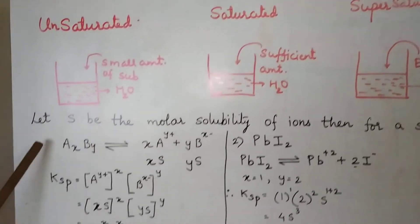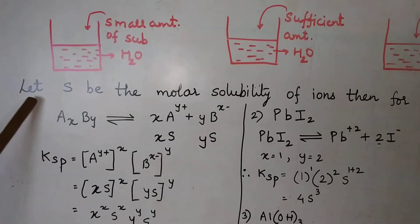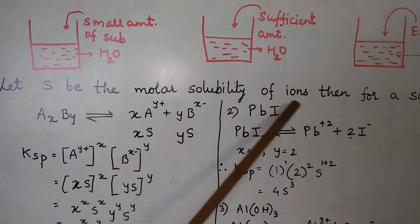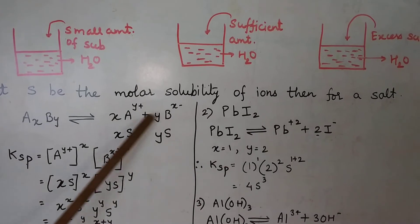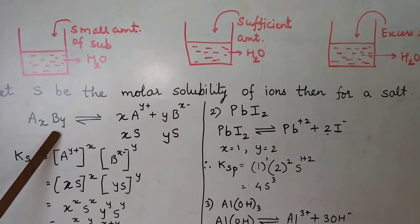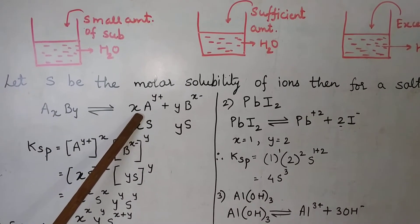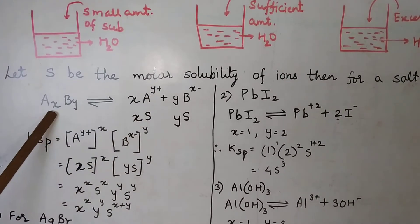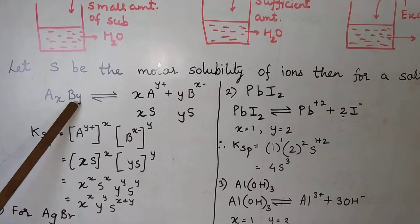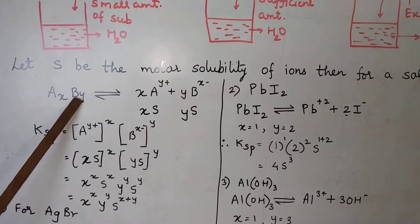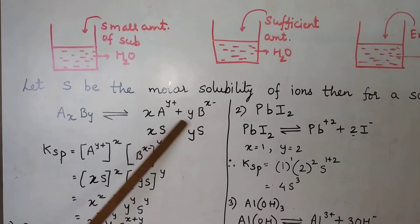Now we are going to consider the concept of molar solubility. Let S be the molar solubility of ions in a solution. Then for a salt — suppose we have a general salt AXBY — the salt ionizes to give X times A(Y+) ions and Y times B(X−) ions. Balancing of ions takes place.